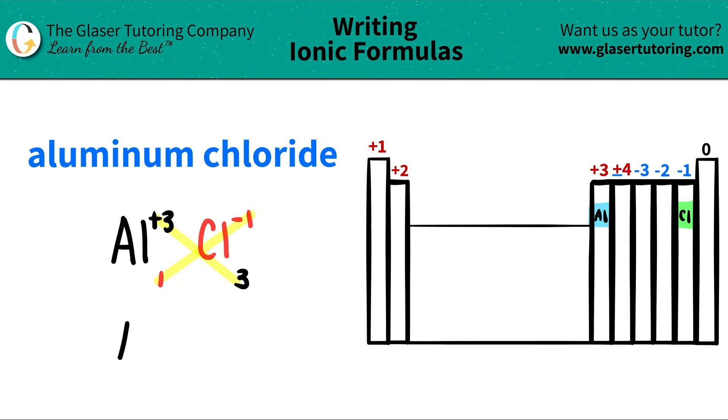So let's write our formula. We got aluminum. I only need one of them. So I don't have to write this one. But when I do write the chlorine, I need three of them. So I have to write that three. And now I am done. So aluminum chloride is just AlCl3.